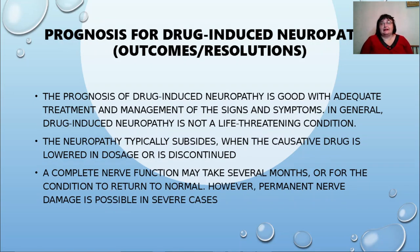The prognosis of drug-induced neuropathy is good with adequate treatment and management. In general, it is not a life-threatening condition. The neuropathy typically subsides when the causative drug is lowered in dosage or discontinued. Complete nerve function recovery may take several months for the condition to return to normal. However, permanent nerve damage is possible in some cases.